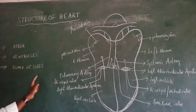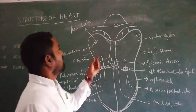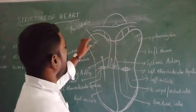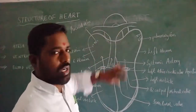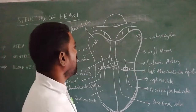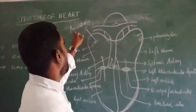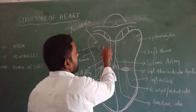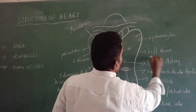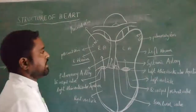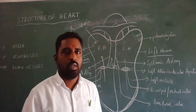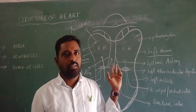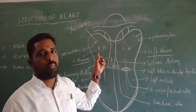The heart consists of atria, ventricles, and blood vessels. The first part is the atria. Atria are the upper chambers of the heart. There are a total of four chambers in the heart. Atria are two in number — one right atrium and one left atrium. Atria are the upper chambers and they receive blood from the body parts.